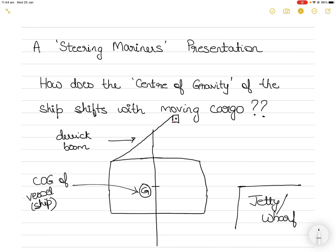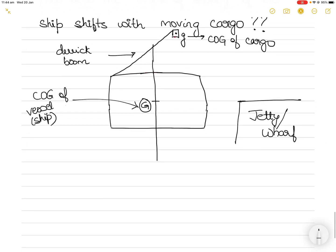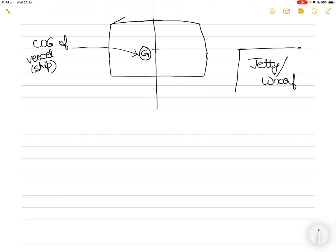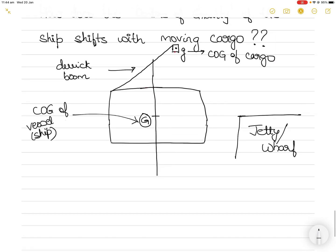There is another center of gravity: this is the center of gravity of the cargo, denoted by the small letter g. I will now show you how each of them behave in different circumstances, and let's get started with how the center of gravity of the ship moves with shifting cargo.